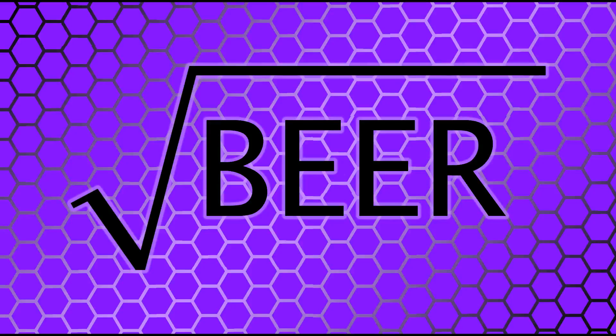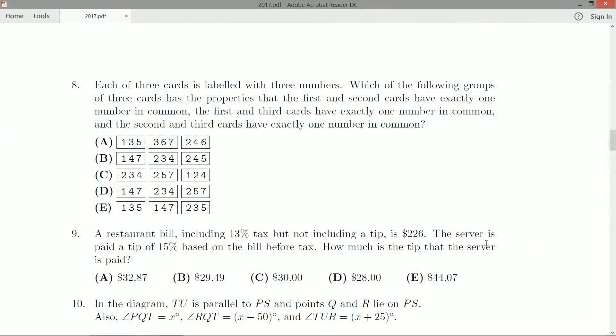Hello everybody and thank you for joining me. We're looking at question 8 on the 2017 Cayley paper. Each of three cards is labeled with three numbers. Which of the following groups of three cards has the properties that the first and second cards have exactly one number in common, the first and third cards have exactly one number in common, and the second and third cards have exactly one number in common? Okay, so each pair of cards has exactly one number in common.